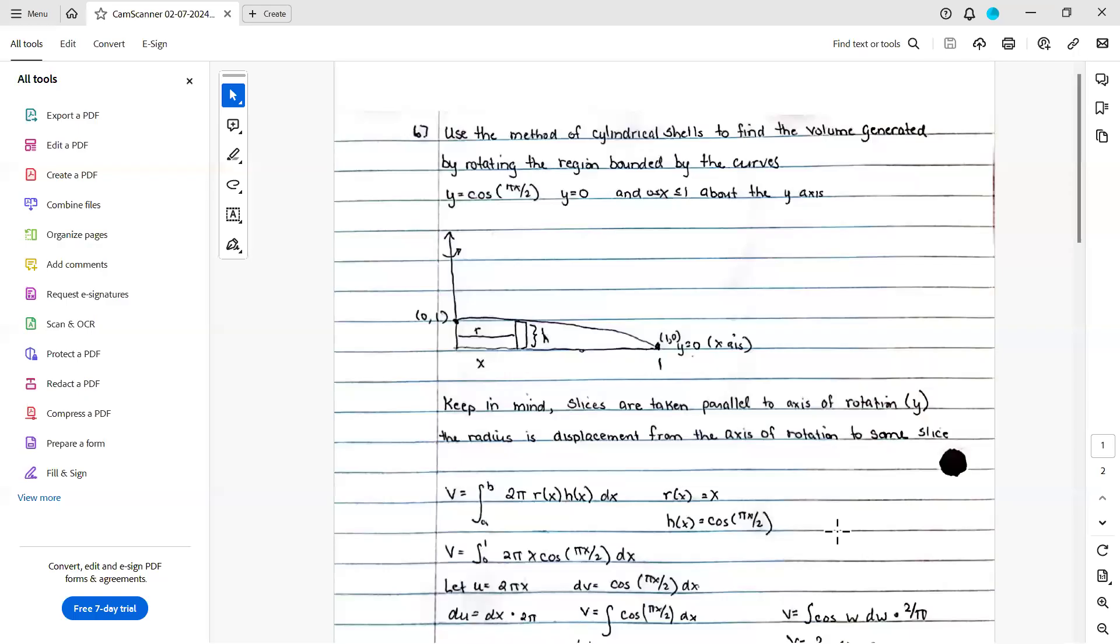This problem is number 67 from section 7.1. It says use the method of cylindrical shells to find the volume generated by rotating the region bounded by the curves y equals the cosine of pi x over 2, y equals 0, and the line x equals 0 to 1 about the y-axis.